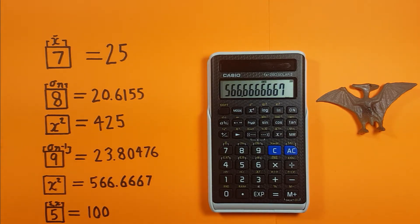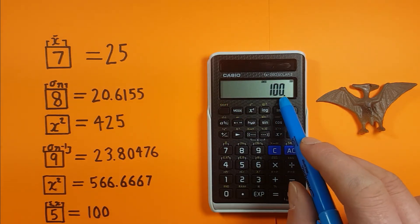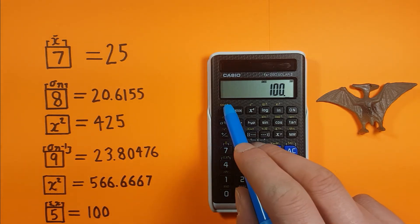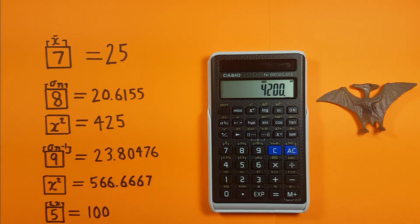We can also get a sum of values with shift 5 which gives us 100, which we know is correct because 10 plus 10 plus 20 plus 60 is 100. And we can also get the sum of squares of values by pressing shift 4, and there we go 4200.